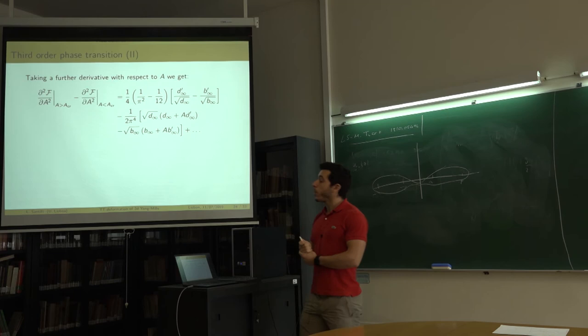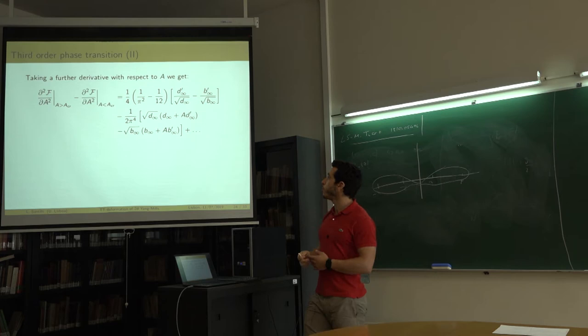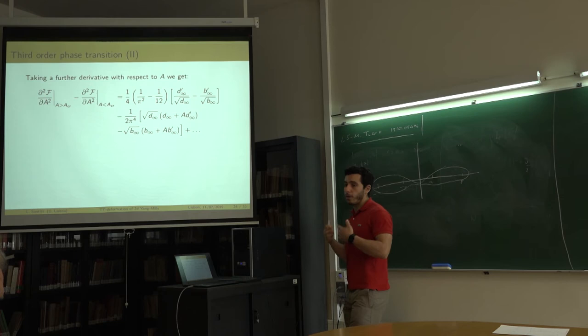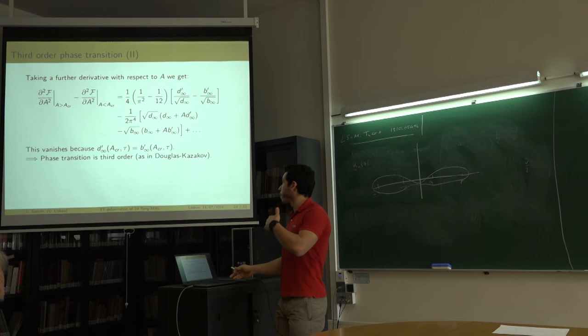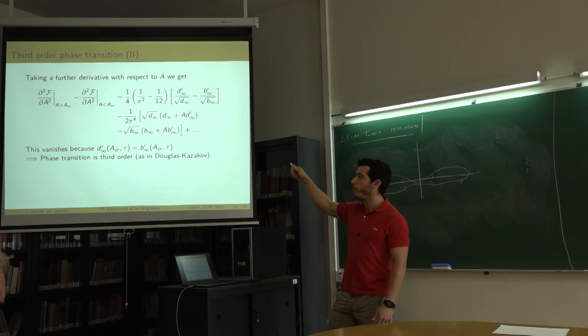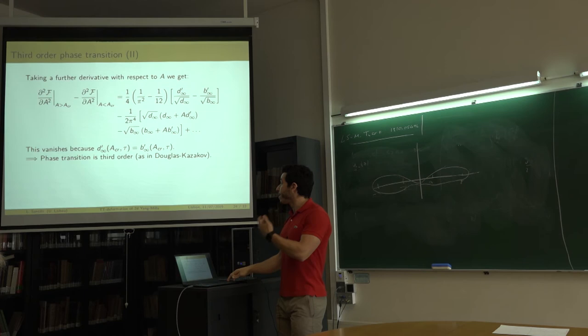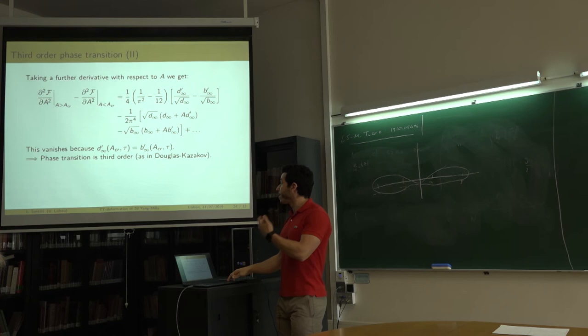Studying the free energy at the critical point: the first and second derivatives with respect to the area vanish because d_∞ and b_∞ and their first derivatives agree there. However, taking a third derivative introduces the second derivatives of b_∞ and d_∞, which differ — so the phase transition is third order. This matches exactly the Douglas-Kazakov result: the TT-bar deformation does not affect the order of the phase transition.